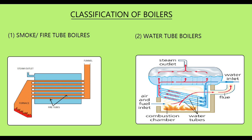Smoke or fire tube boilers: combustion gases pass through tubes which are surrounded by water. Because of the production of low saturated steam, these boilers are normally used for auxiliary purposes on board, like heating. Water tube boilers: water contained in small bore tubes is exposed to the heat of combustion. Compared to fire tube boilers, generation of steam is at much higher pressures and temperatures, and the steam rising process is much quicker.